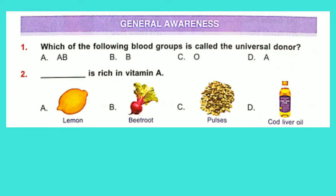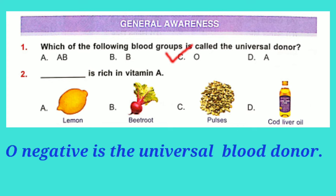General Awareness, Question No. 1: Which of the following blood groups is called the universal donor? Option C is correct: O-. O- is the universal blood donor. 38% of the population has O-positive blood, making it the most common blood type. O- is 6.6%.